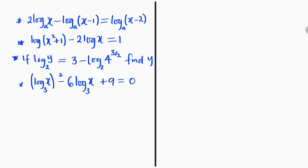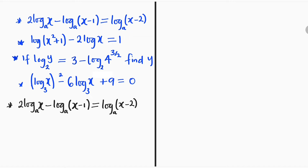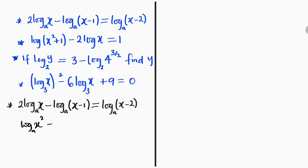Let me copy the first question here. We have 2 log x to base a minus log of x minus 1 base a, and to the right we have log of x minus 2 also base a. Let us apply one of the laws of logarithm: if a constant is multiplying a log, that constant can always serve as a power of that term, which in this case we have as x. So we get log of x² base a minus log of x minus 1 base a, and to the right we still have log of x minus 2 in base a.